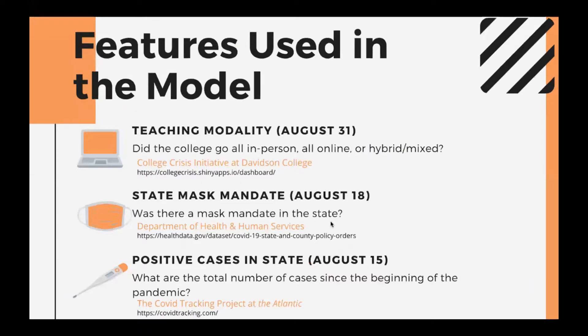We're hoping that our model will help school administrators make more informed decisions in the future. The features we used in our model were first of all teaching modality, a categorical variable with three levels, taken from August 31st to capture the teaching modality schools settled on right before the fall term started. The following two features are state mask mandate and positive cases in state — environmental factors capturing whether the state had a mask mandate and how many cases were in the state right before the beginning of the fall term.